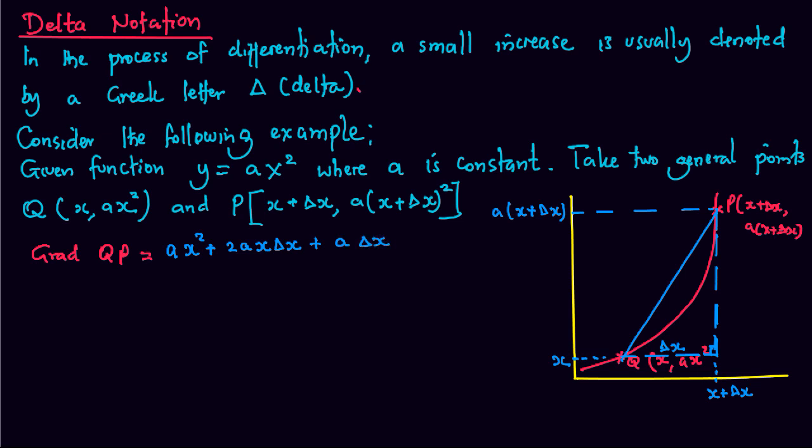plus A delta x squared minus Ax squared, divided by change in x which is x plus delta x minus x.